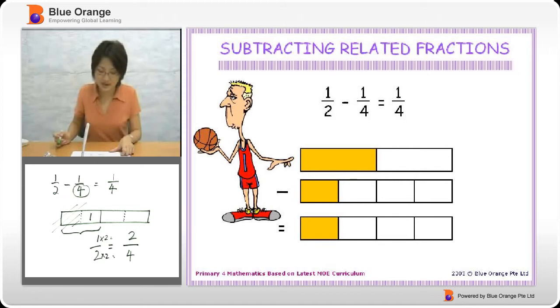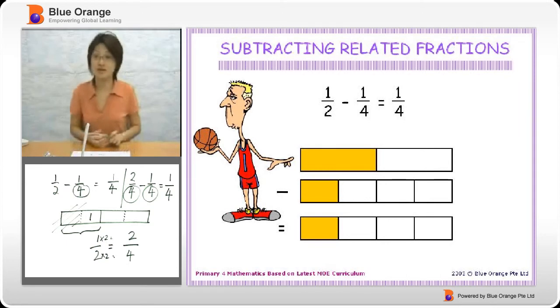Now, with this, you know that it is two quarters take away one quarter. You see the like fractions here, like the similar denominator. So two take away one, you will have one out of four. You see it?